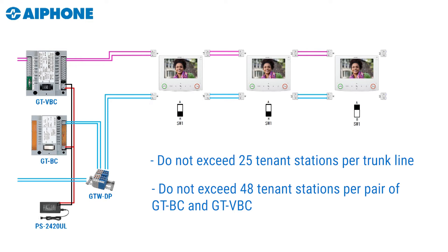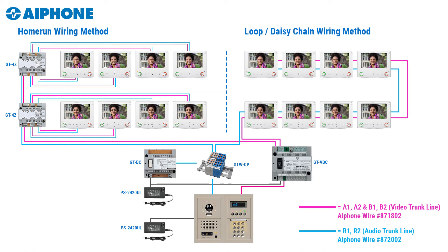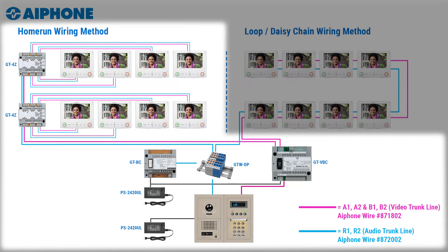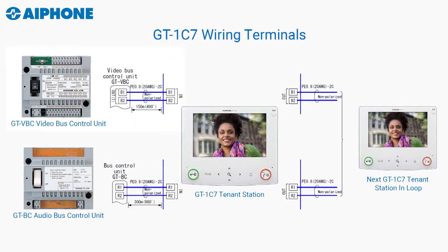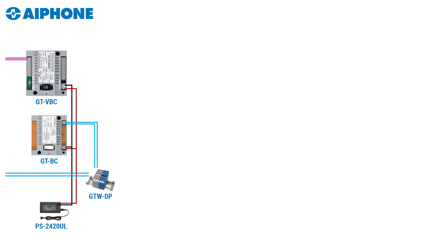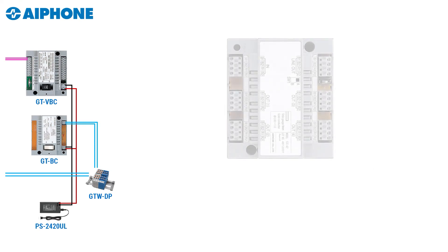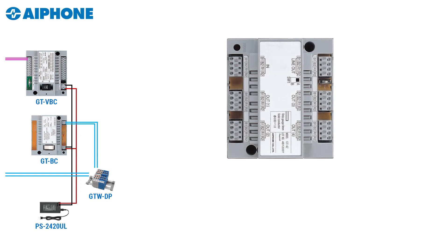Now let's look at how to use the home run method to wire the GT system. The same rules apply: you cannot exceed 25 apartments on an individual trunk line. We'll be utilizing B1 and B2 for the video trunk line connectors and R1 and R2 for the audio connectors on the tenant stations. When using the home run method you need to add a new product called the GT4Z, which is designed to support up to four apartments. You cannot take a loop wire and terminate it on the GT4Z — it can only support an individual apartment off of each output.